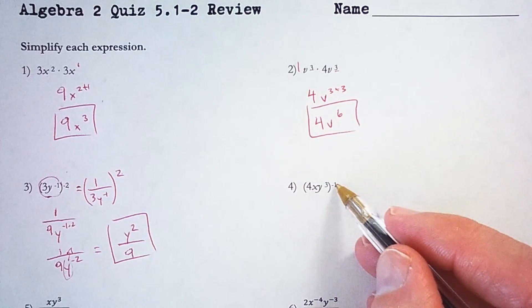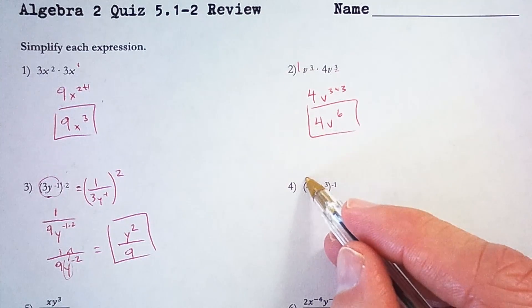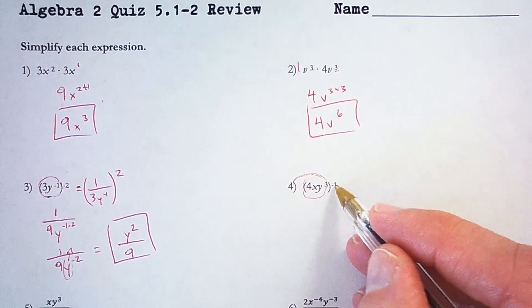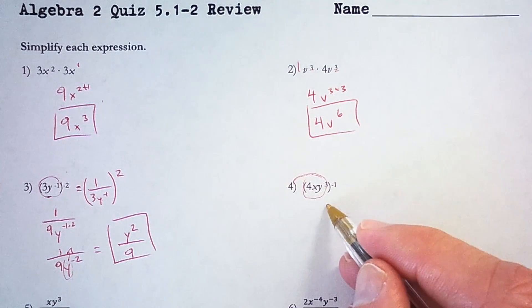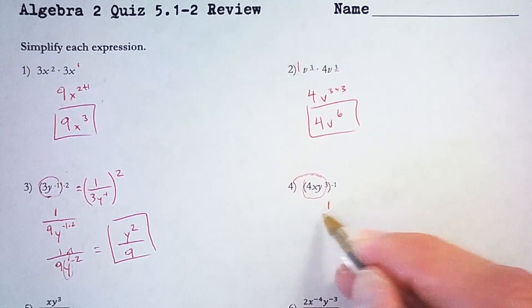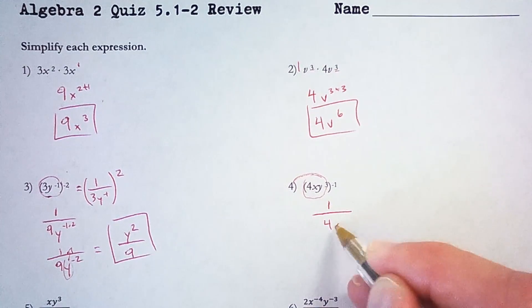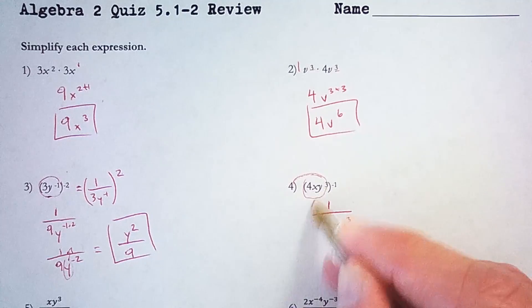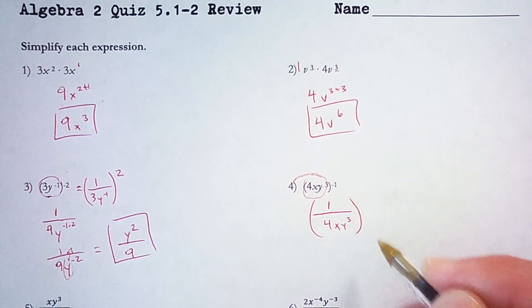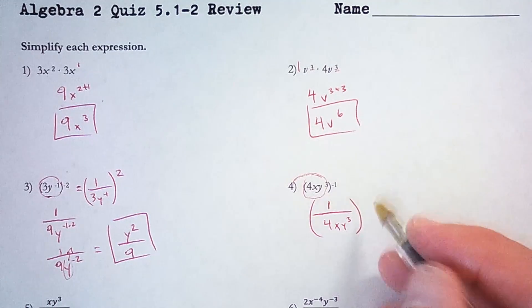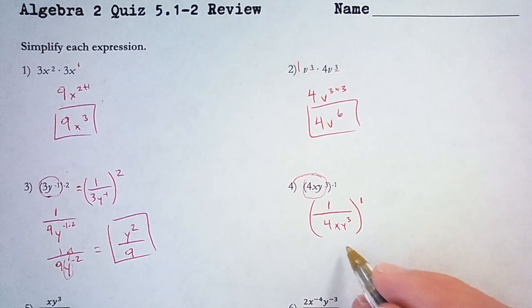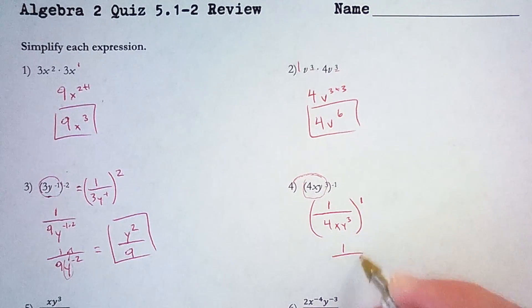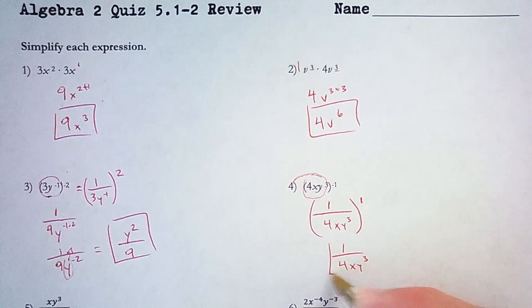Here, once again, I've got a negative power. So I need to take all this stuff in the parentheses and put it into the denominator. So that's 1 over 4xy cubed. And now that negative 1 power became the positive 1 power — 4 and everything to the first power is 1 over 4xy cubed.